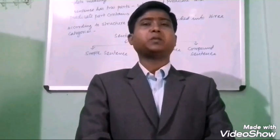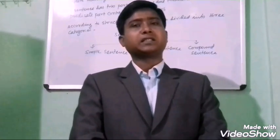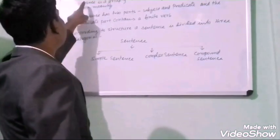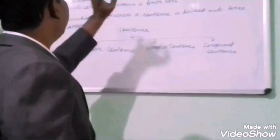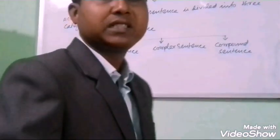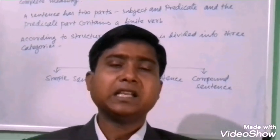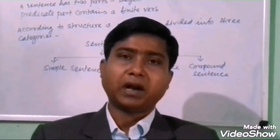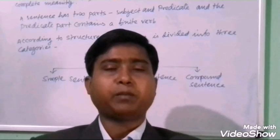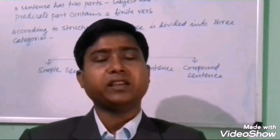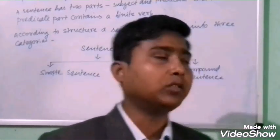Today, I would like to discuss what is meant by a sentence. A sentence is a group of words with a grammatical structure and complete meaning. It has a particular grammatical structure and complete meaning. A sentence has mainly two parts: one is subject and another is predicate. In the predicate part, there we can see the finite part. According to structure, a sentence is categorized into three categories.